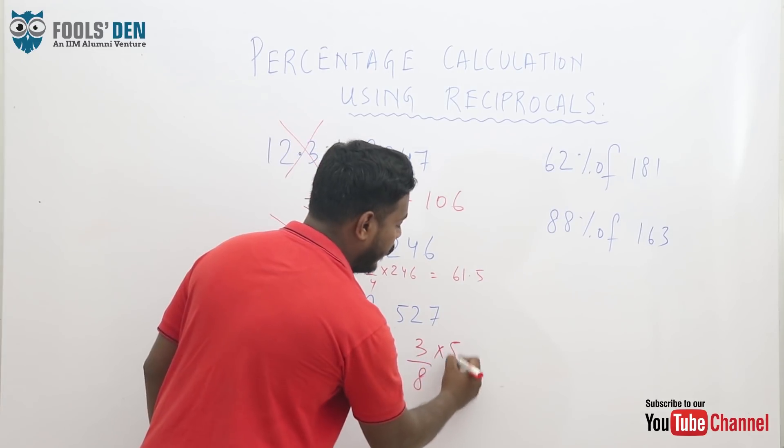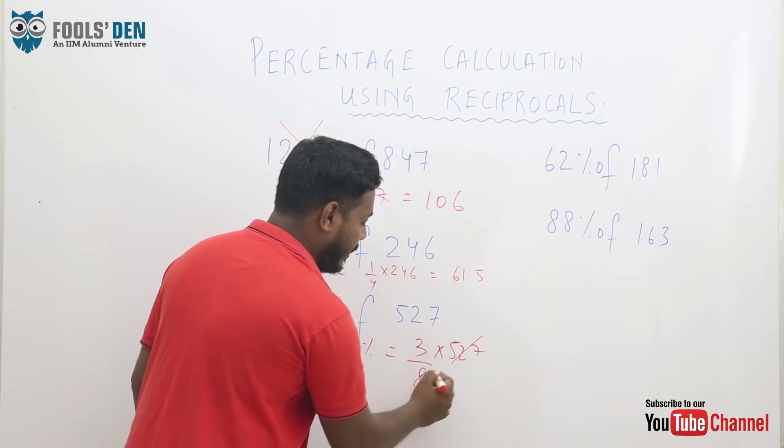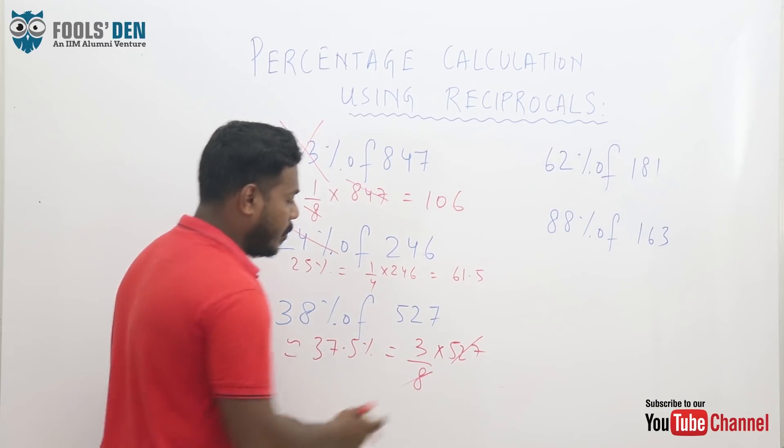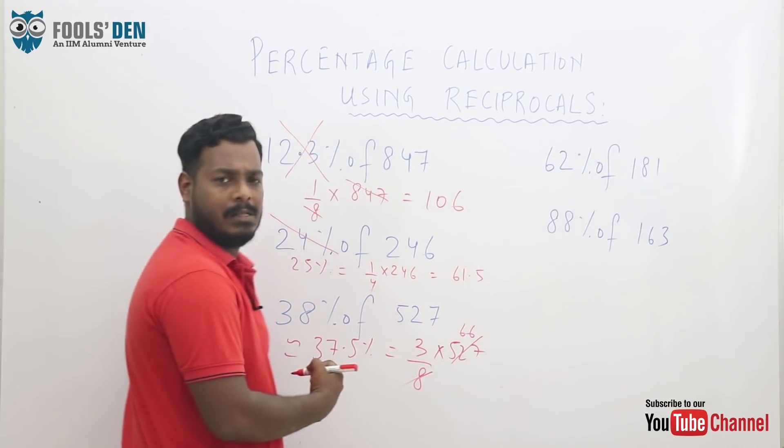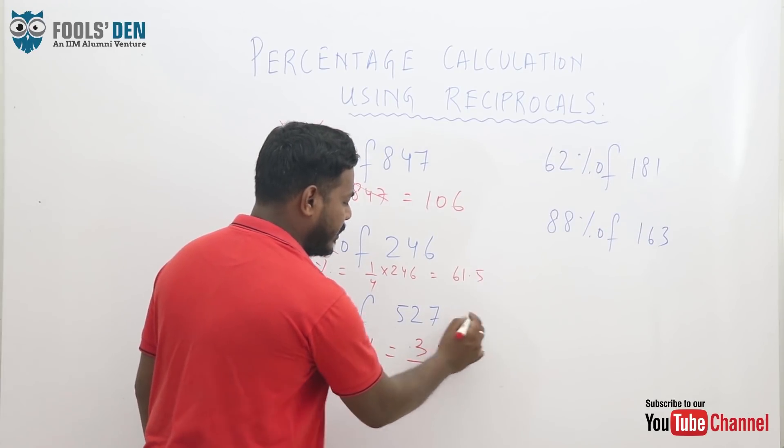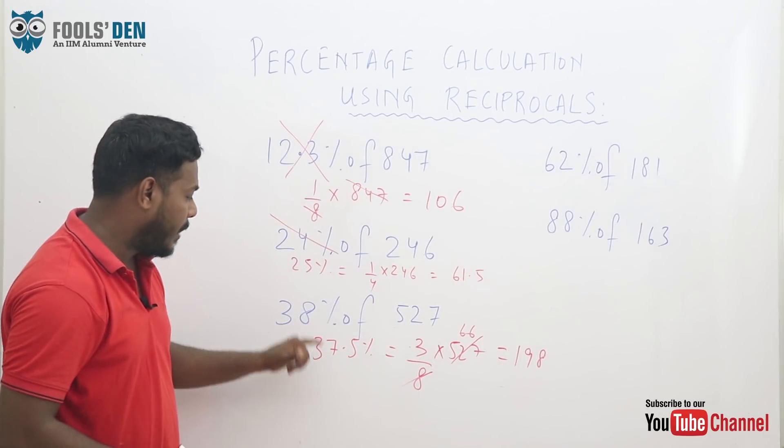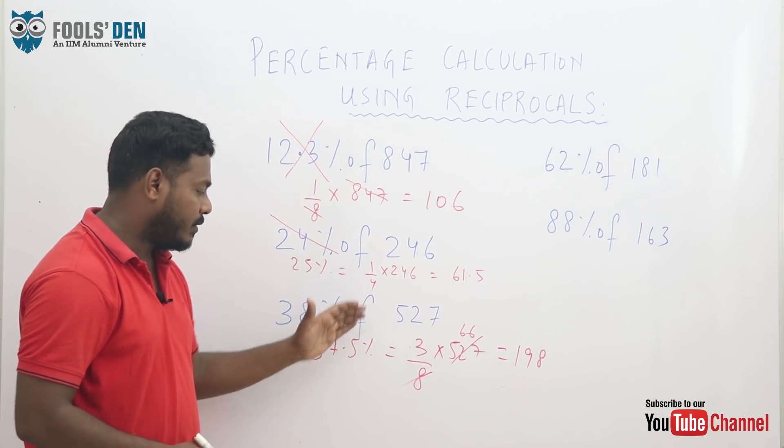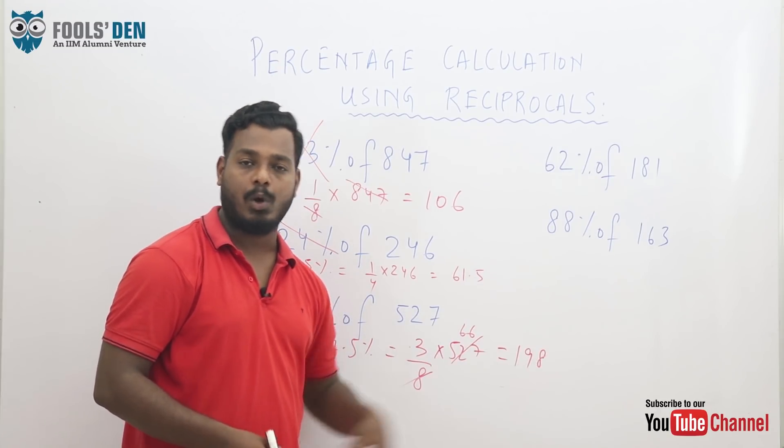So 38 approximated to this much and this much is this. So 3 by 8 into 527, I think this can be calculated easily. You just divide this by this. So it will be approximately 66, so 3 into 66 will be around 198. So it was a big percentage. We have simplified it using reciprocals and calculated the value. That saves a lot of time.